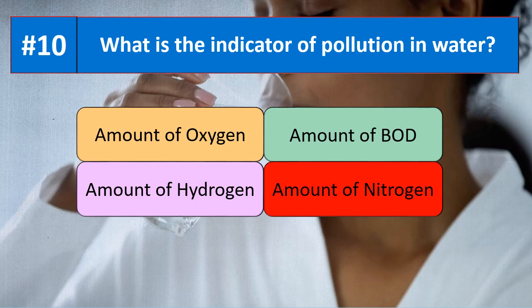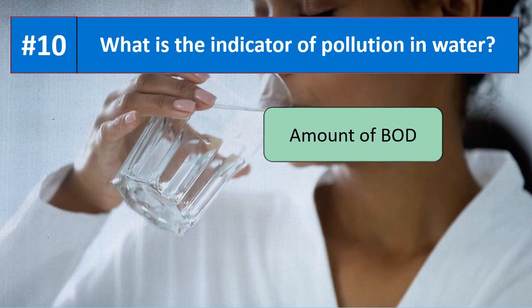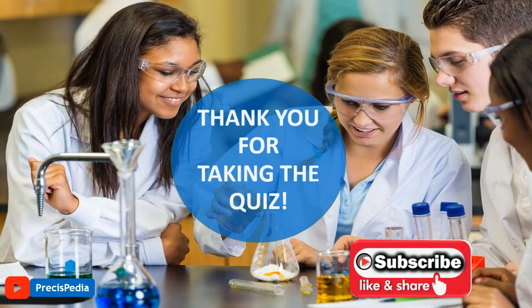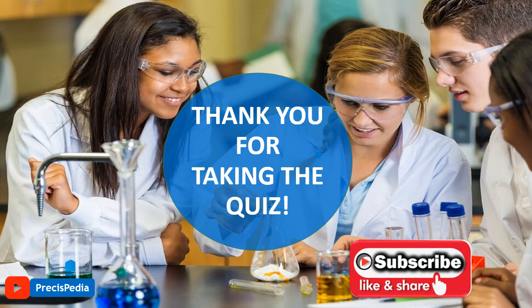Today's last question: what is the indicator of pollution in water? Is it the amount of oxygen, amount of BOD, amount of hydrogen, or amount of nitrogen? The correct answer is amount of BOD, which is known as biological oxygen demand. Thank you for taking the quiz — if you liked it, please subscribe and share the video.